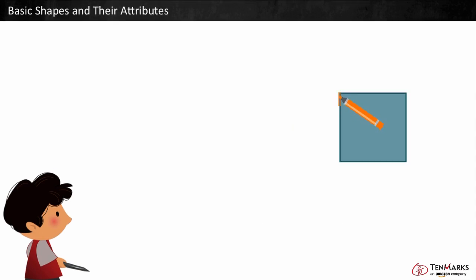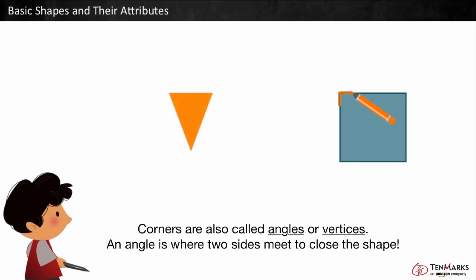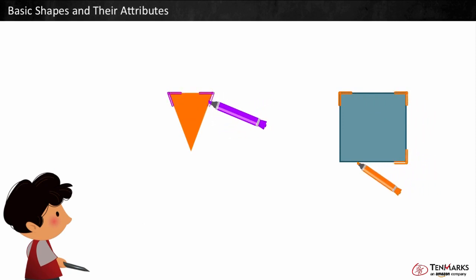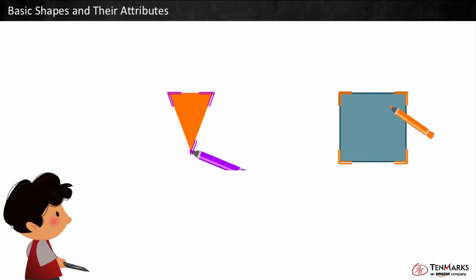Shapes also have corners, which are called angles or vertices. The corner or angle is where two sides meet to close a shape. Here are some angles.